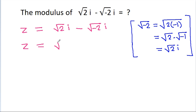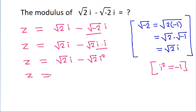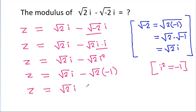So g is equal to √2·i minus √(-2i), and √(-2i) is √2·i times i. So g is equal to √2·i minus √2·i², and i² is equal to -1, so g is equal to √2·i minus √2 times -1, which gives us √2·i plus √2.